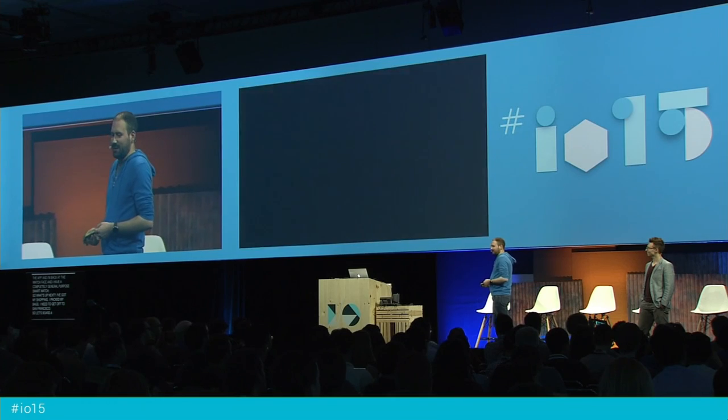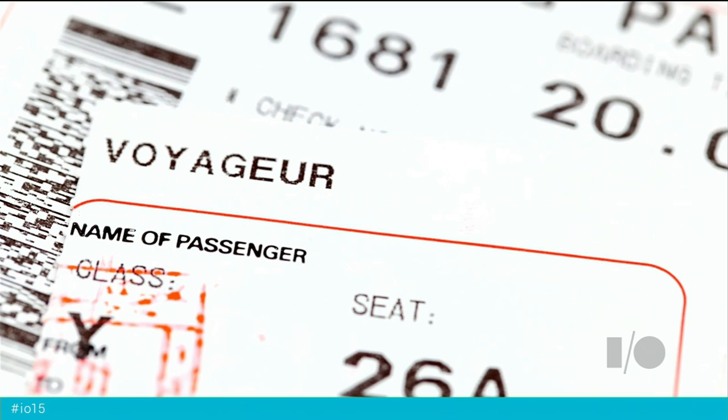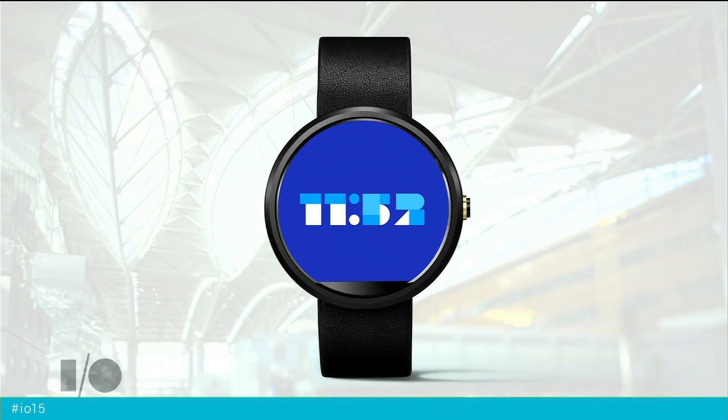Next: I've got my shopping, packed my bags, and I need to get off to San Francisco. Let's board a plane. The way we're all used to doing this: I show up at the airport, get given a piece of paper — a very important piece of paper which I need to not forget — and I'll need to pull it out several times. Mobile boarding passes have made that a bit easier, but how many times have you found yourself getting to the front of the line while busy looking at a web page or checking email? With Android Wear and the always-on functionality, there's a better way.